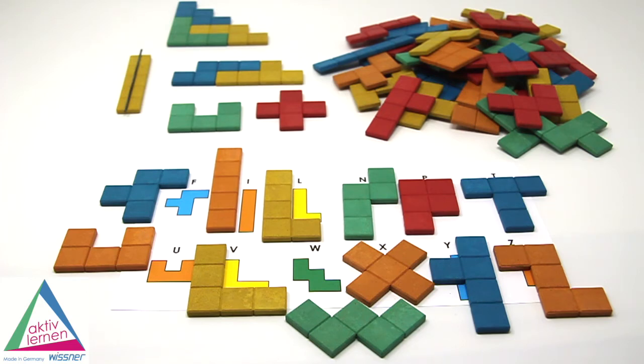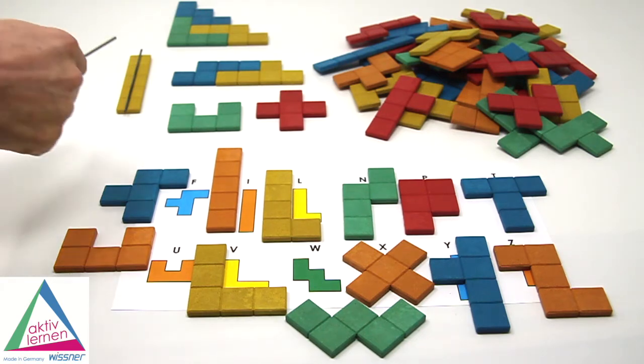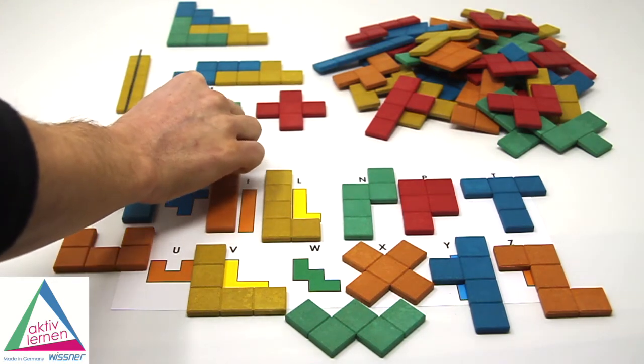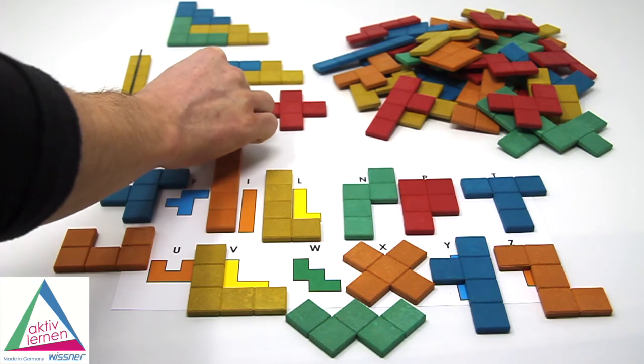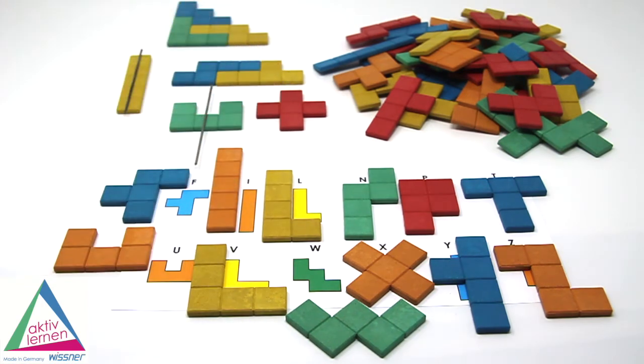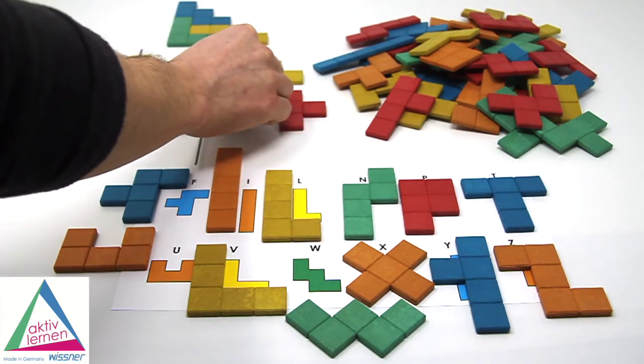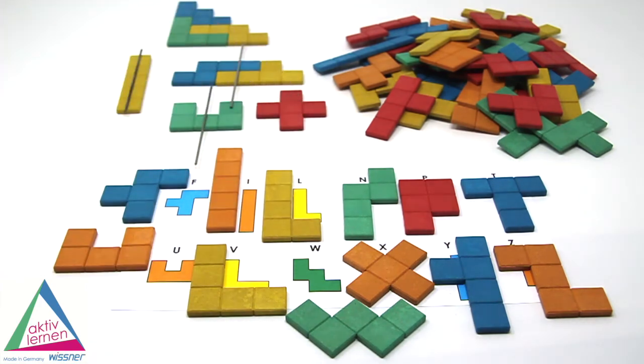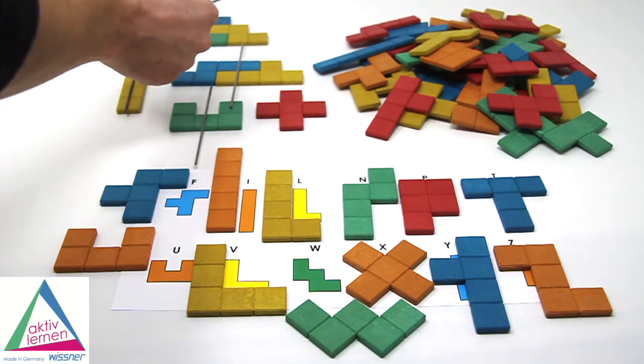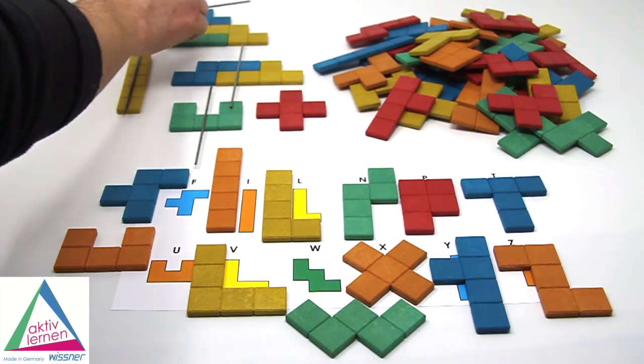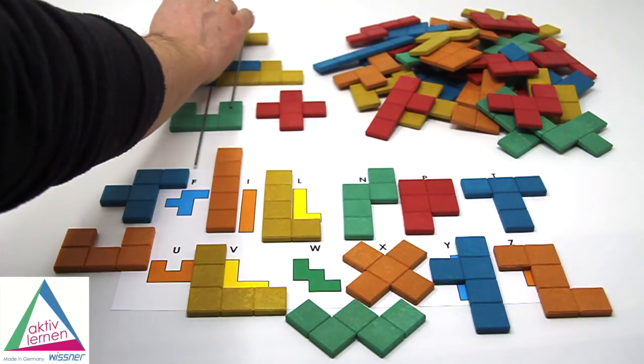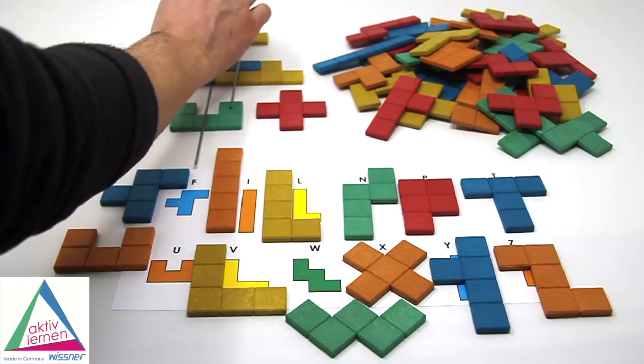So here, for example, you can find a symmetric axis with one pentomino. You can also find axes with two pentominos laid together. For example, it would be here. For three pentominos laid together, the symmetric axis would be here, and so on.